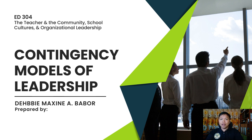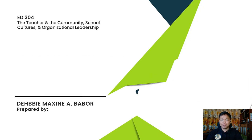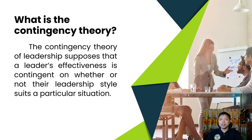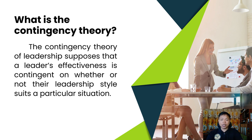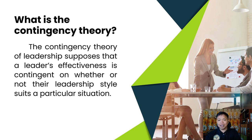My topic for this video is all about the contingency models of leadership. Before we proceed on discussing what are the contingency models of leadership, let us first know what is the contingency theory. The contingency theory of leadership supposes that a leader's effectiveness is contingent on whether or not their leadership style suits a particular situation. A person might be a successful leader in one situation and a poor leader in another. This idea proposes that in order to increase your chances of becoming a productive leader, you should be able to assess each circumstance and determine whether or not your leadership style would be beneficial.